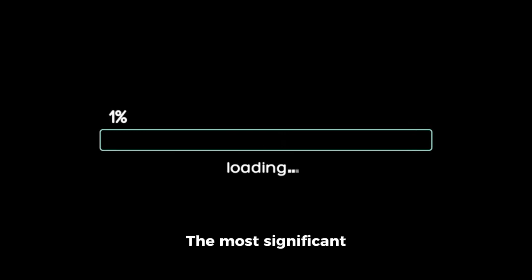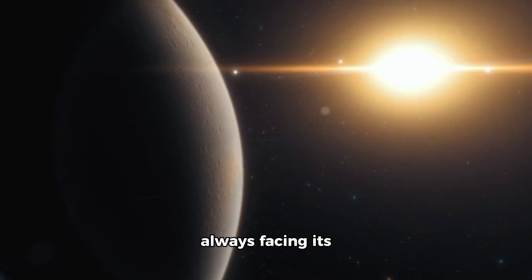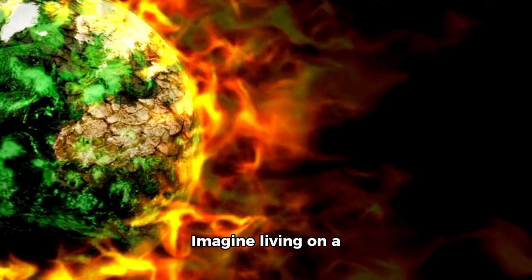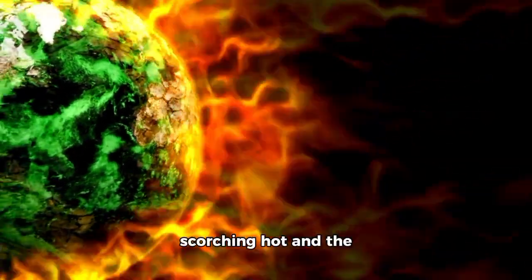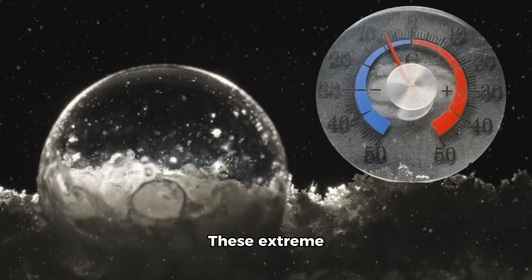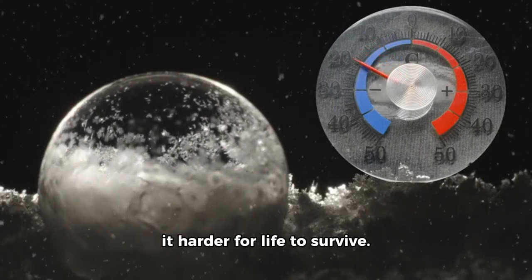The most significant is tidal locking. This means that one side of Proxima B is always facing its star, while the other side is in permanent darkness. Imagine living on a planet where half is scorching hot and the other half is freezing cold. These extreme temperature differences could make it harder for life to survive.